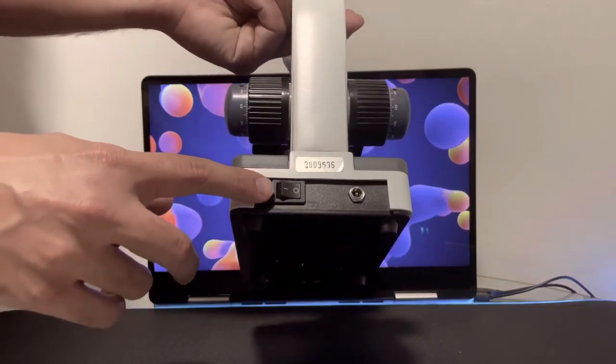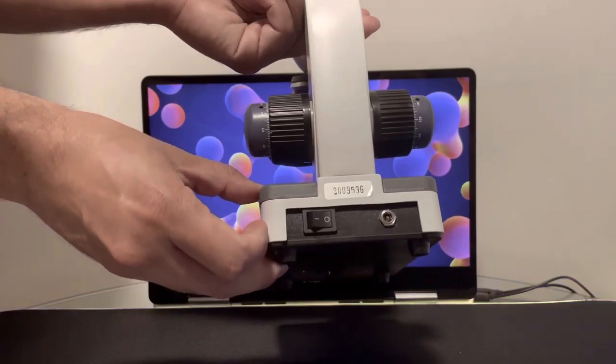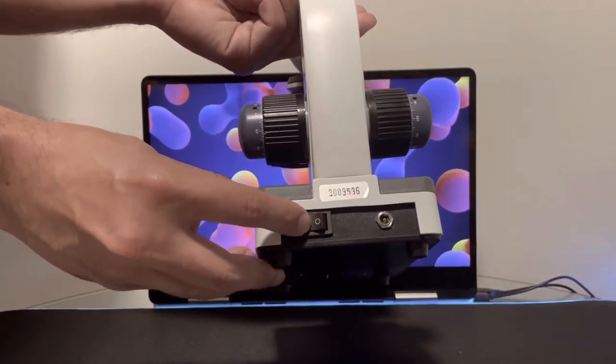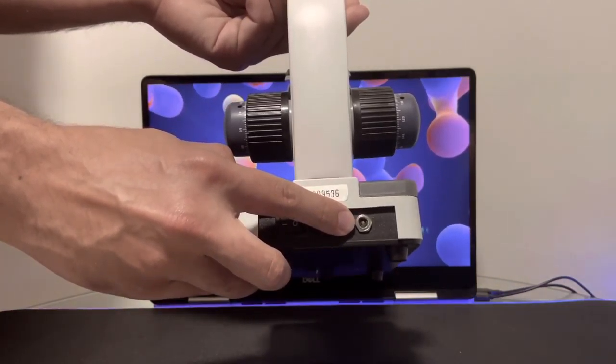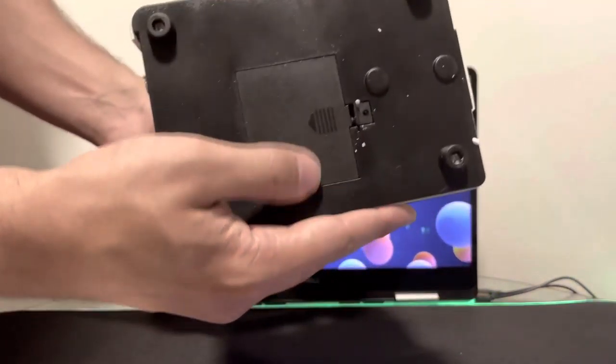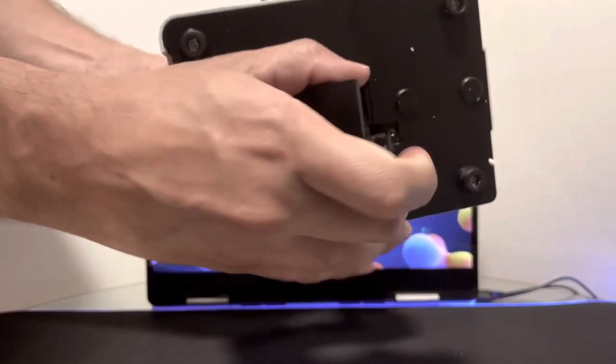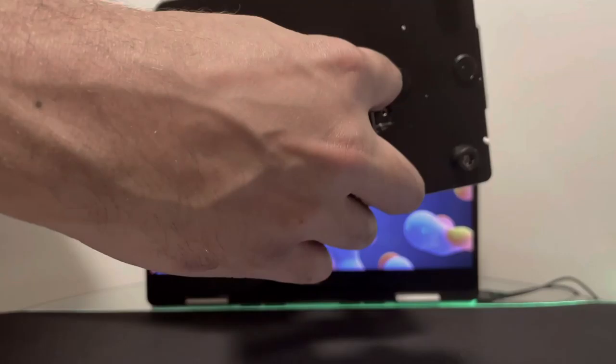Here on the back is the power switch to the compound light microscope. This is the on and off switch. What's so good about this is that you can plug it into the wall. You don't necessarily need the batteries, the double-A batteries that it brings. The great thing about the double-A batteries, if you have three of them, you can use it wirelessly.